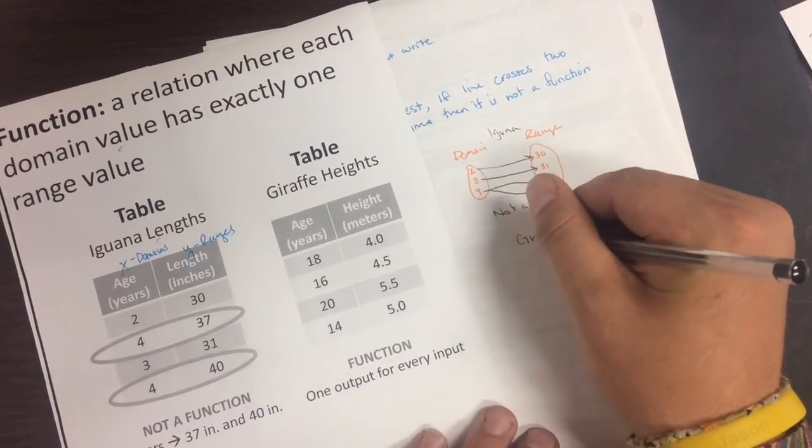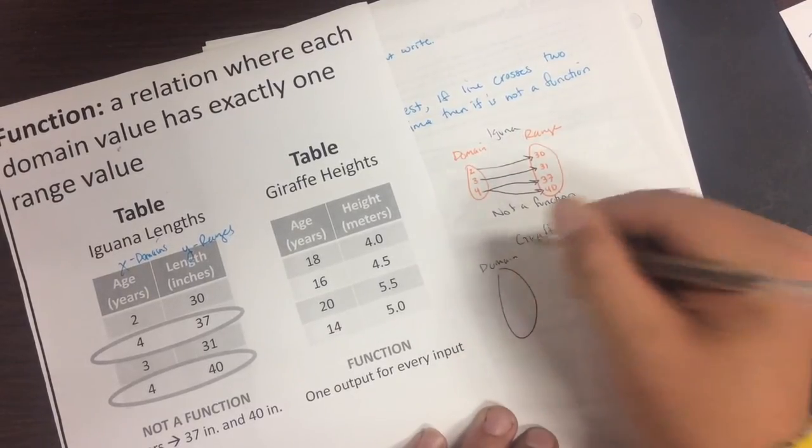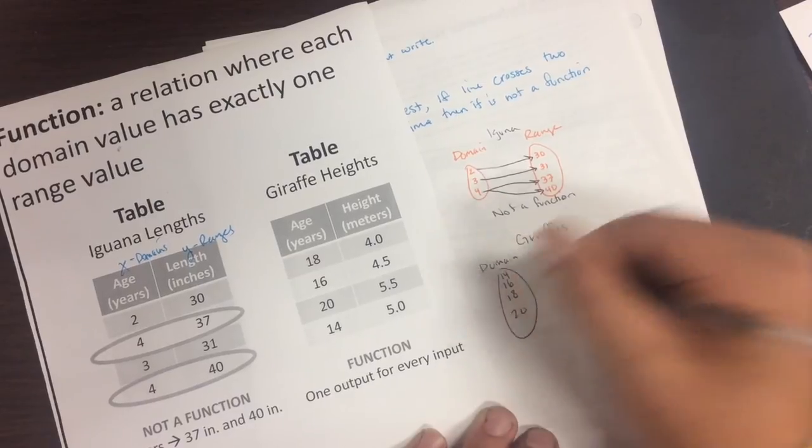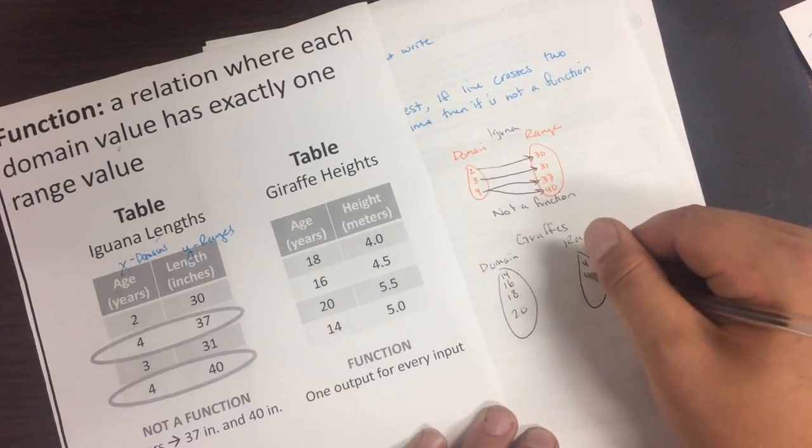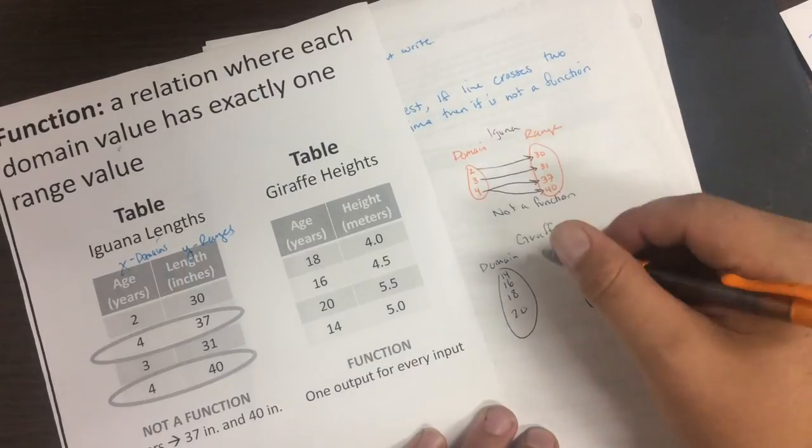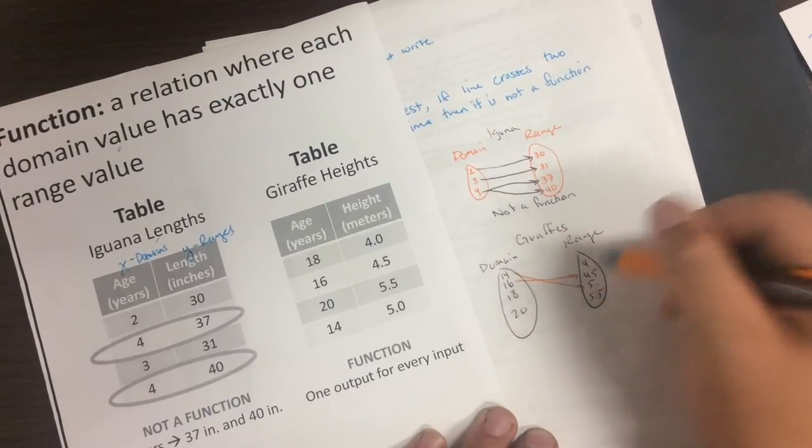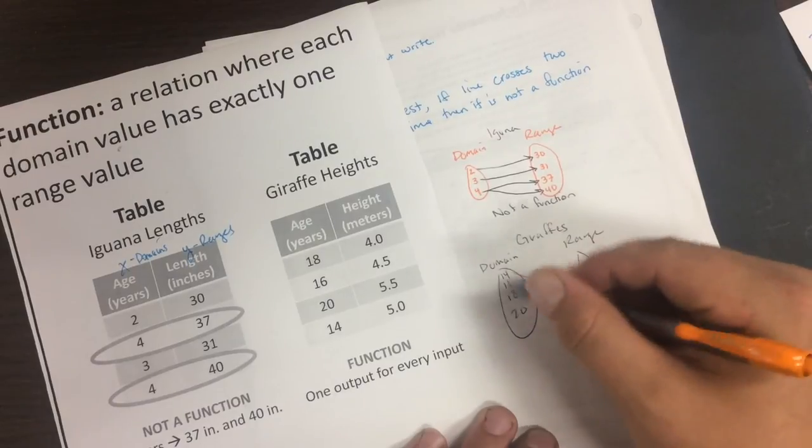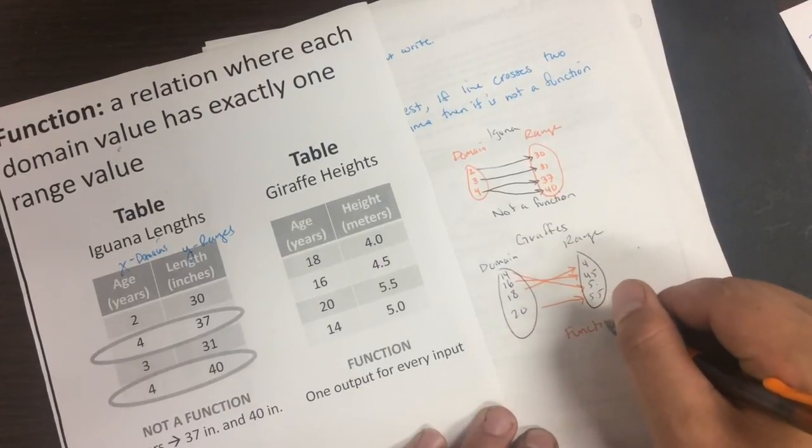Let's take a look at the giraffes. For the giraffes, our domain, or our inputs, is 16, 18, oh, 14 up at the top here, and 20. Our range, or our outputs, is 4, 4.5, 5, and 5.5. If we were to map this, or draw our arrows, 14 gave us 5, 16 gave us 4.5, 18 gave us 4, and 20 gave us 5.5. Notice how each input has only one arrow showing an output, and that means that this is indeed a function.